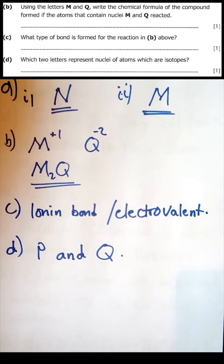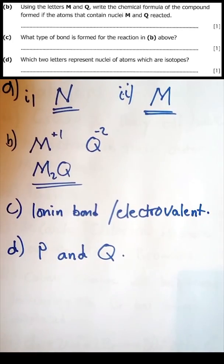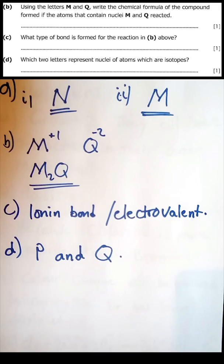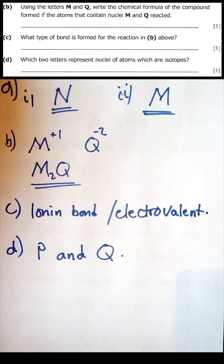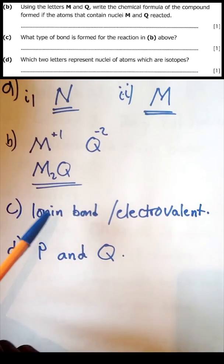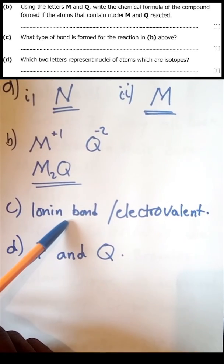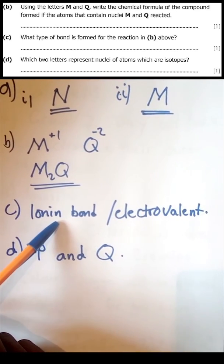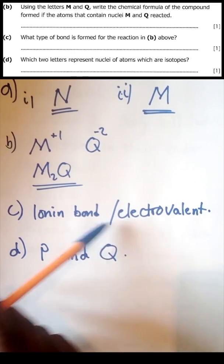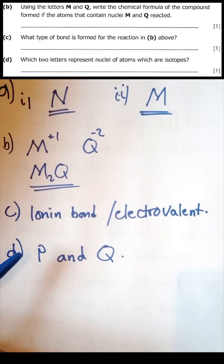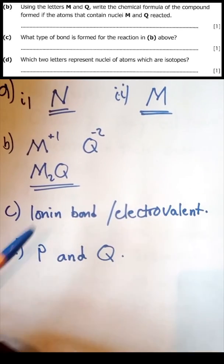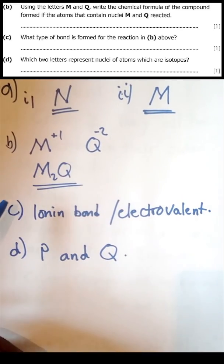Question 3c: what type of bond is formed for the reaction in b above? This bond is an ionic bond, or you can answer by that other name of it which is electrovalent. So ionic bond or electrovalent bond is the bond which bonds these two atoms together.